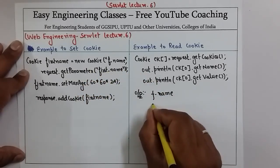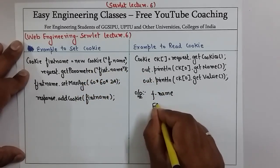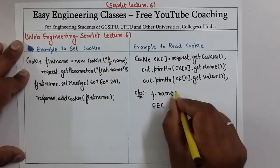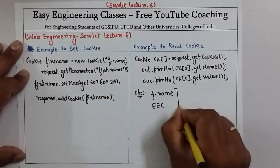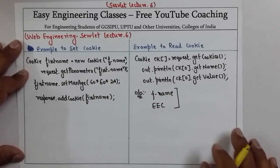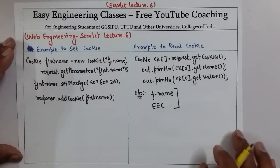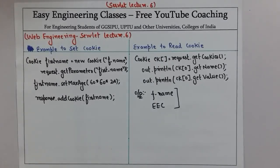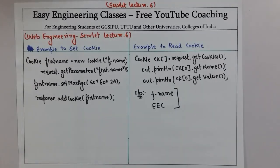The output in this case will be "f_name" and the value present in that parameter, for example "EEC". This is how you can use cookies in your servlet program. Thank you for watching the video. Please subscribe to my YouTube channel for more tutorials on servlet and other computer science subjects.